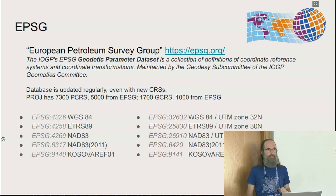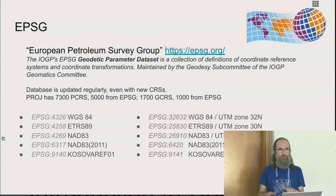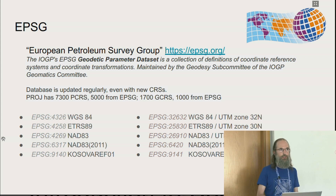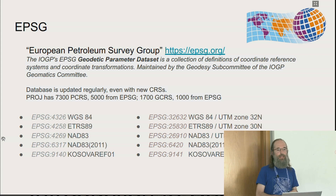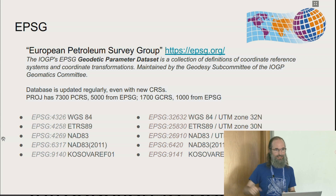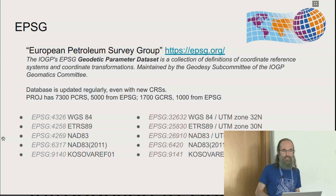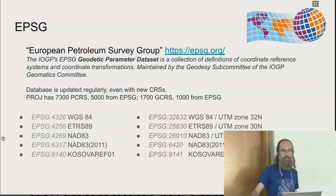EPSG stands for European Petroleum Survey Group. Focus on 'survey' rather than 'petroleum.' It is a public database — a parameter dataset — with definitions of thousands of coordinate reference systems, all their parameters, and the transformations to go from one to another. The official location is not epsg.io — that's a viewer — the official one is elsewhere. On the left-hand side of the EPSG registry are geographic CRS, on the right-hand side are projected ones.